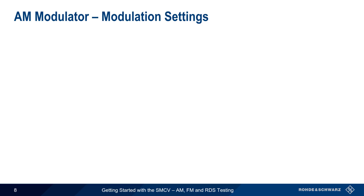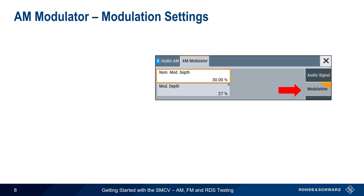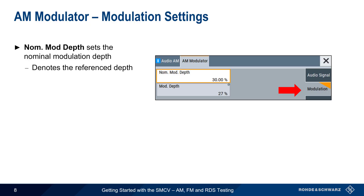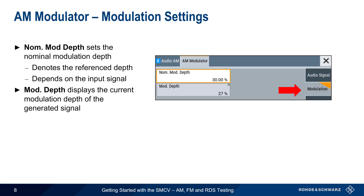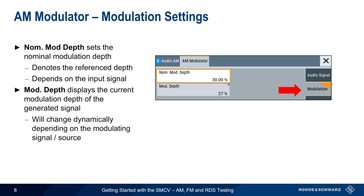The other tab under AM Modulator is Modulation Settings. Here, the nominal modulation depth of the signal can be configured. Note that this denotes the reference depth and will depend on the input signal. The value shown under modulation depth shows the current modulation depth of the generated signal. This is an informational display and cannot be changed or set by the user, but the values will change dynamically depending on the modulating signal or source.